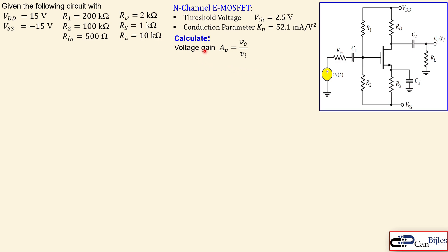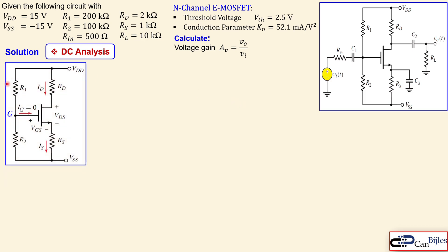For this example we calculate the voltage gain, which is the output voltage divided by the input voltage. Starting with the DC analysis, we consider the circuit under DC conditions — capacitors are perfectly open. This reduces the circuit so that the input is disconnected, the load is disconnected, and only the biasing network remains.